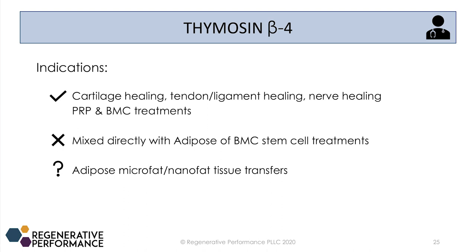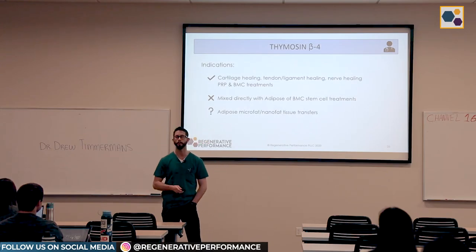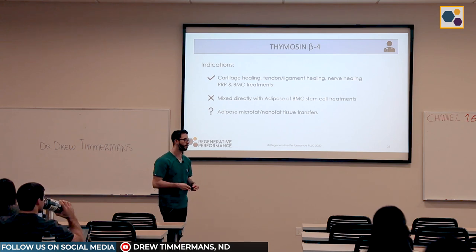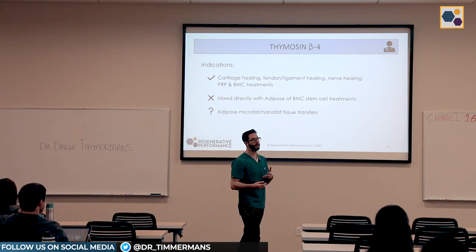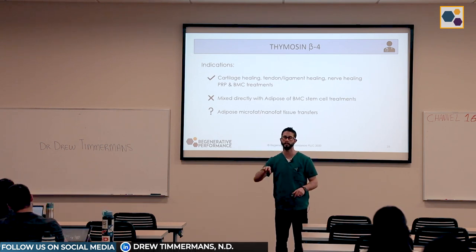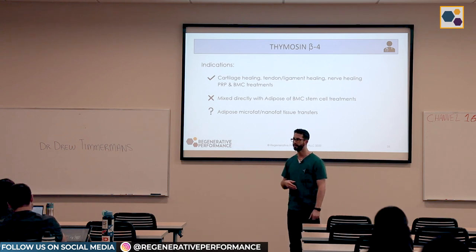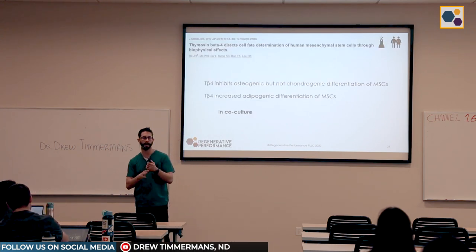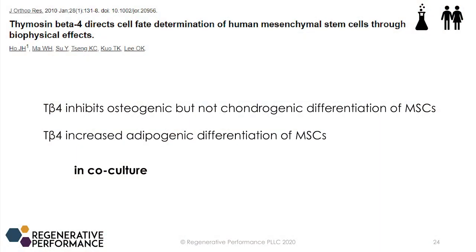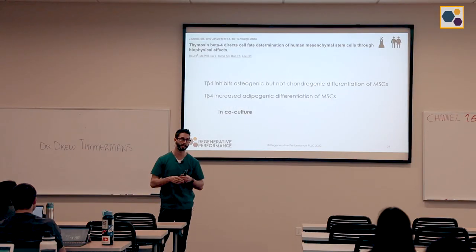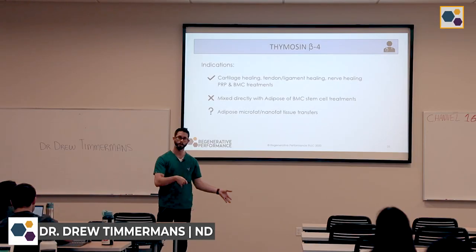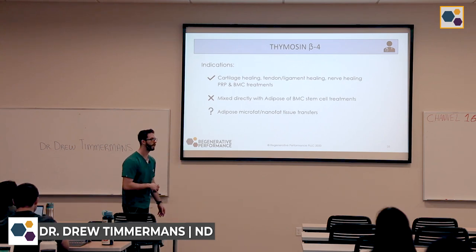Here are the indications I would use thymosin beta-4 for. Any form of healing. I don't generally mix it directly with adipose or bone marrow-derived treatments. I'm also unsure whether I want to mix it with adipose microfat and nanofat tissue transfers — not mixing it directly, but even doing the normal 20-day course of TB4 after an adipose treatment. My concern is: if this research holds weight in vivo and TB4 increases adipogenic differentiation of MSCs, then when we're moving adipocytes and pre-adipocytes to a new location, maybe I don't want that. I'm still figuring that one out.